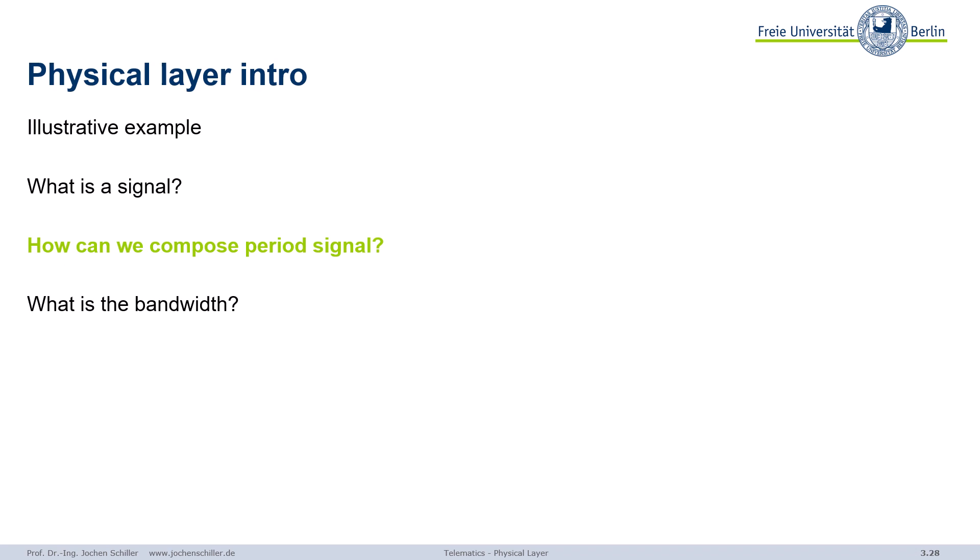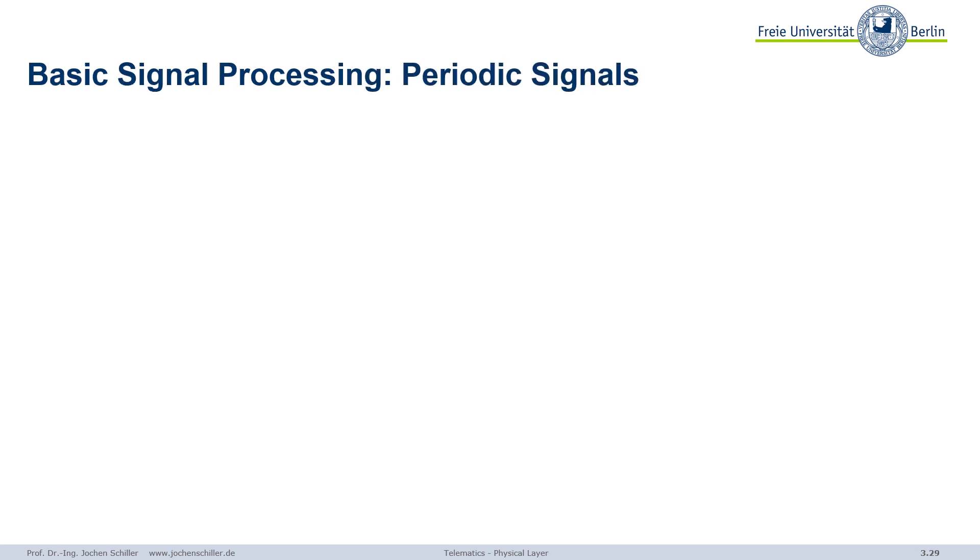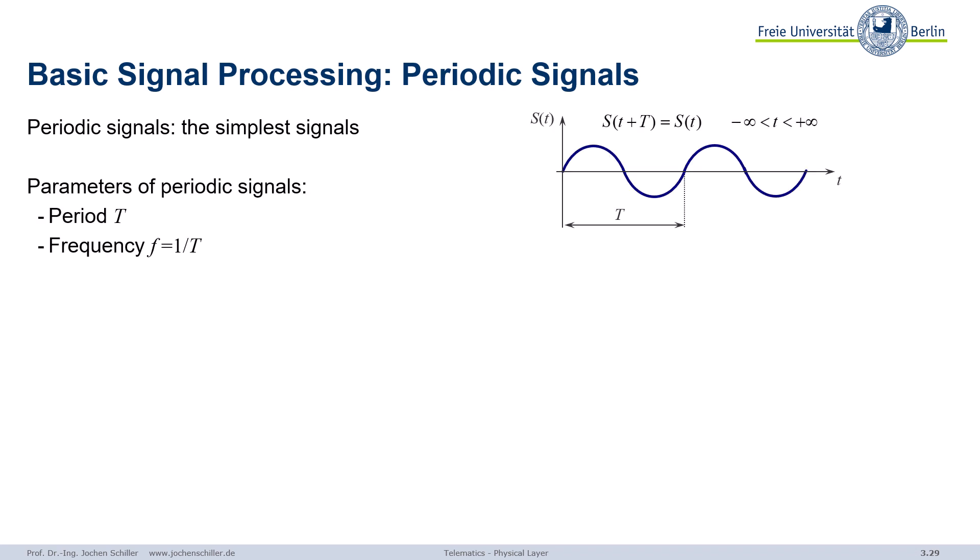We have to go a bit deeper into math and the ways signals are transported, so we have to look at periodic signals. Very basic signal processing: periodic signals. Simple periodic sine waves, sinusoidal oscillations, are often used for transmission, as shown here in this first example.